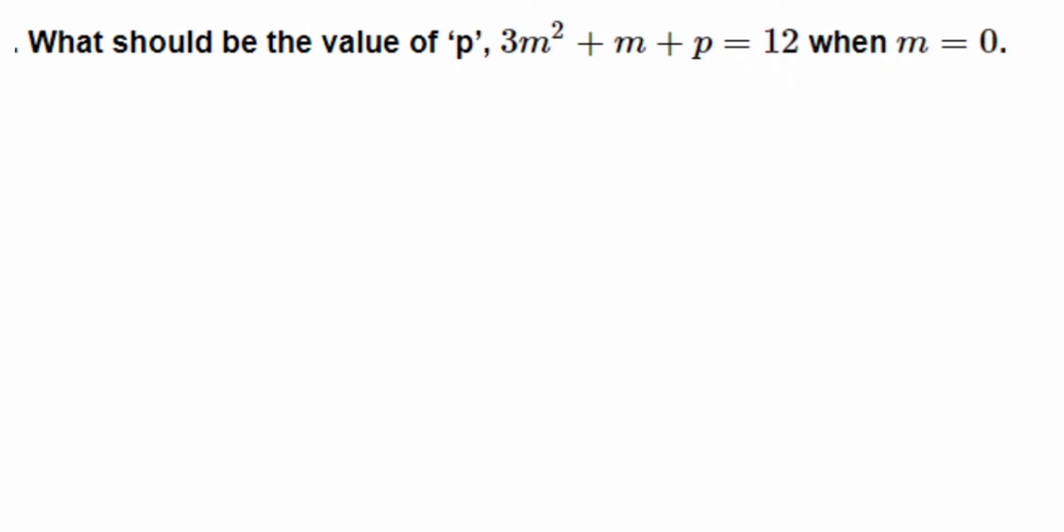If the m value is 0, what will be the value of p? We have to substitute the value of m in this given equation and then solve it. Let's begin by first writing down the equation: 3m² + m + p = 12.